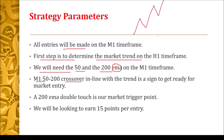After the M1 50/200 EMA crossover in line with the trend — meaning we've determined an upward market context and we see the 50 crossing the 200 in line with the H1 bias — that is a sign for us to get ready for market entry. If we see this crossover on M1 in line with the H1 trend, it signals to prepare to enter the market.